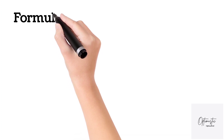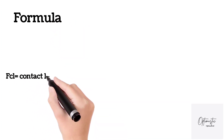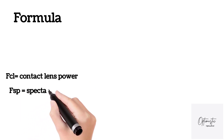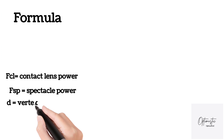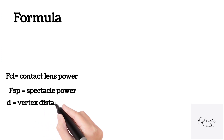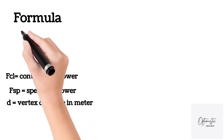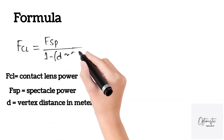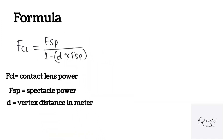For converting the spectacle power into contact lens power, we have a formula: FCL = FSP divided by (1 minus d times FSP), where FCL is the contact lens power, FSP is the spectacle power, and d is the vertex distance in meters.